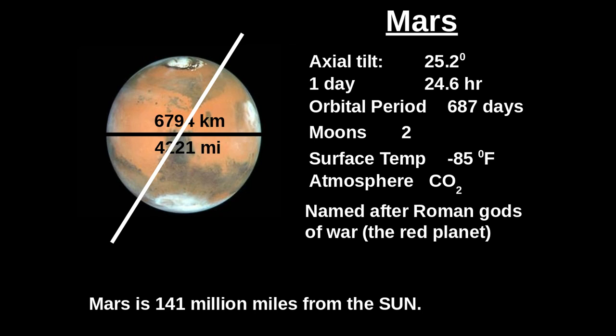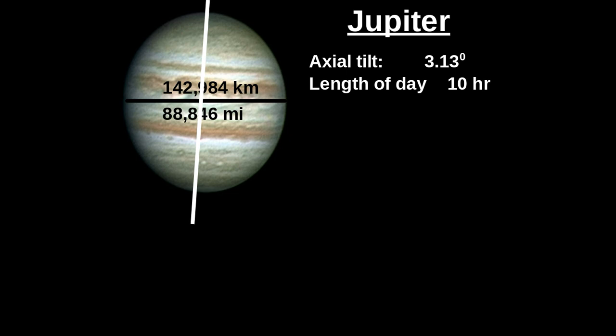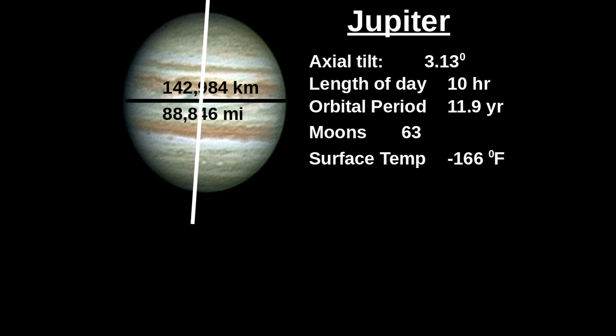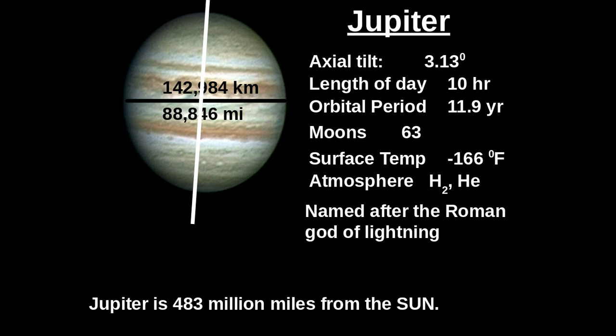Now let's look at the gaseous planets. Jupiter is huge — 88,000 miles across. Axial tilt is 3.13 degrees. Length of day is 10 hours — Jupiter is spinning very fast. Orbital period is almost 12 years to get around the sun once. 63 moons. Surface temperature is minus 166 degrees Fahrenheit. Atmosphere is hydrogen and helium. Named after the Roman god of lightning. Jupiter is 483 million miles from the sun. Right away we notice that the atmospheres are much lighter on the gaseous planets with hydrogen and helium — they're much bigger and they spin around faster.